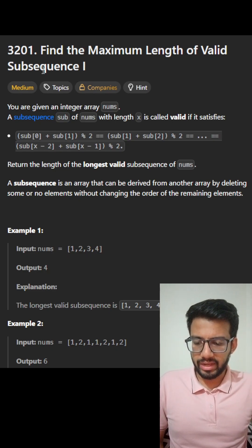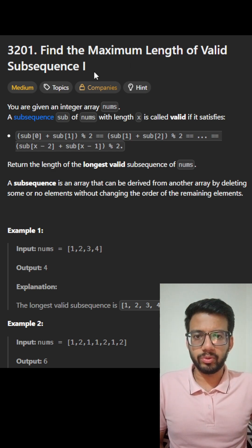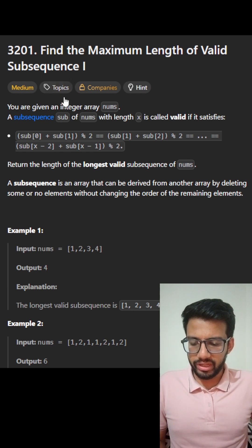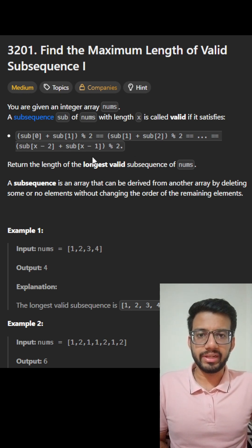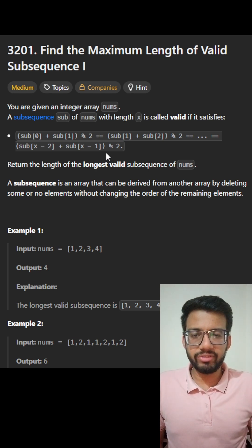Today's question is to find the maximum length of valid subsequence. As per the conditions, a subsequence is called valid only if the sum of adjacent pairs have the same parity. This means that for a subsequence to be valid,